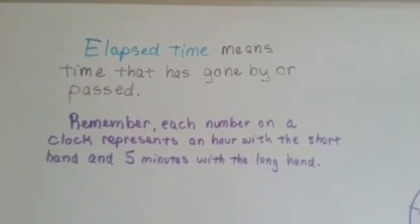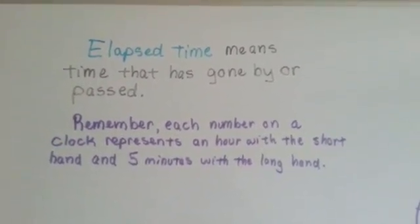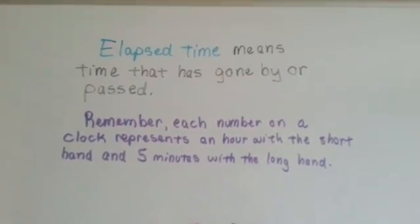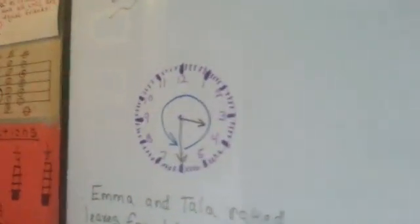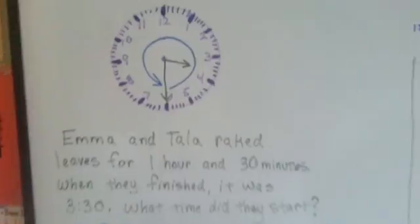Remember each number on a clock represents an hour with the short hand and five minutes with the long hand. And each time the minute hand goes around, it makes the hour hand move one number.